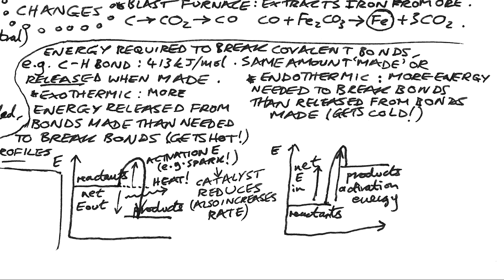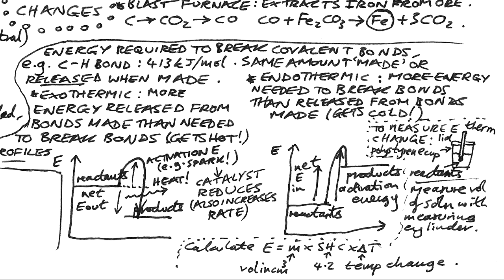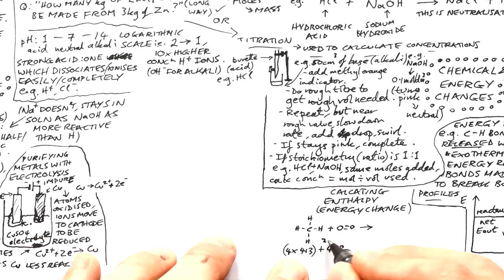Here's the reaction profile for an exothermic reaction: the energy level of products is lower than reactants. The hump between them represents activation energy — the energy needed to start the reaction (like a spark for a fire). The difference between the two energy levels is the net energy released as heat. For endothermic reactions, the products end up at a higher energy level than the reactants. To measure energy change practically, use a polystyrene cup with a thermometer, record start and end temperature, and use Q = mcΔT.